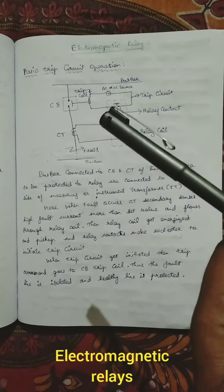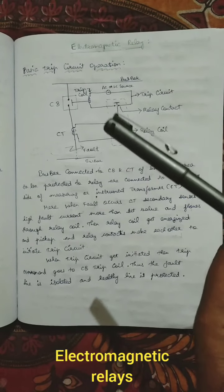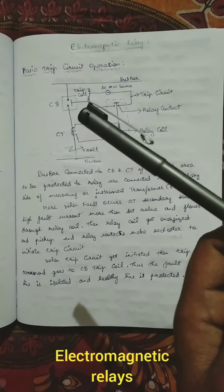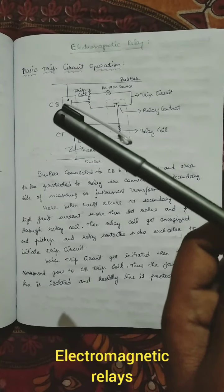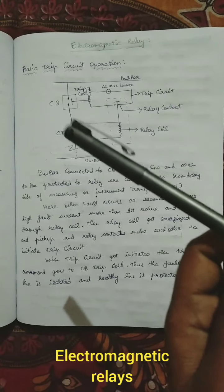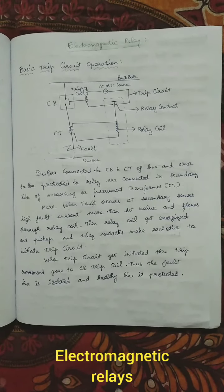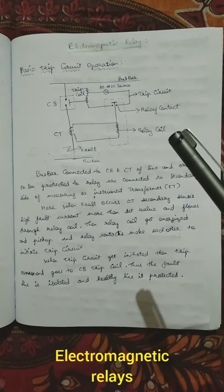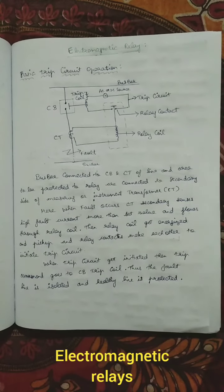For a DC source, one end is positive and the other is negative. When the relay contacts touch each other, a pulse is generated to the trip coil of the breaker, the trip is initiated, and the breaker opens. The faulty line gets isolated from the healthy line. This is the basics of a relay tripping circuit. Now we will go to electromagnetic relays.